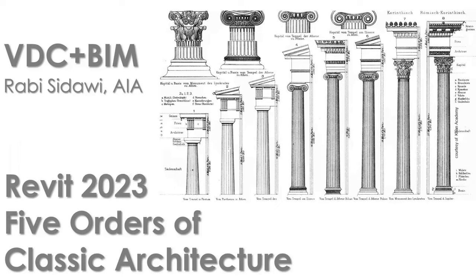Welcome back. In this video we'll be talking about Revit and the 5 orders of classic architecture. There are three classic orders — the Doric, Ionic, and Corinthian — but there are two more orders we'll be discussing as well, which are derivatives of the other three in Greek and Roman architecture. Our focus is not so much on the classic architectural design but more on how to model this inside of Revit and what techniques we can use in information modeling.